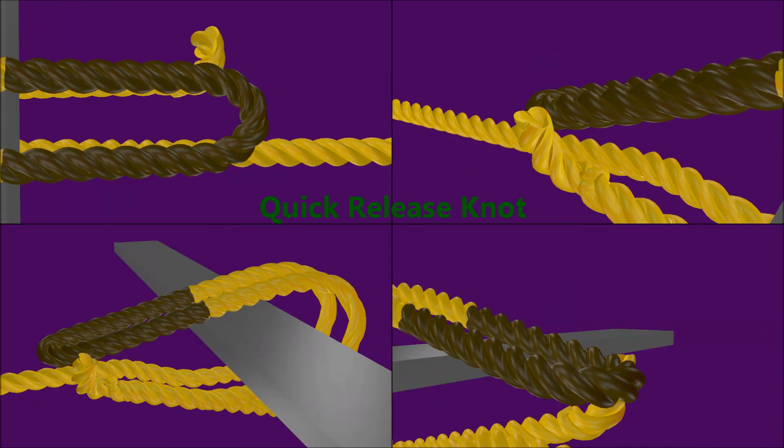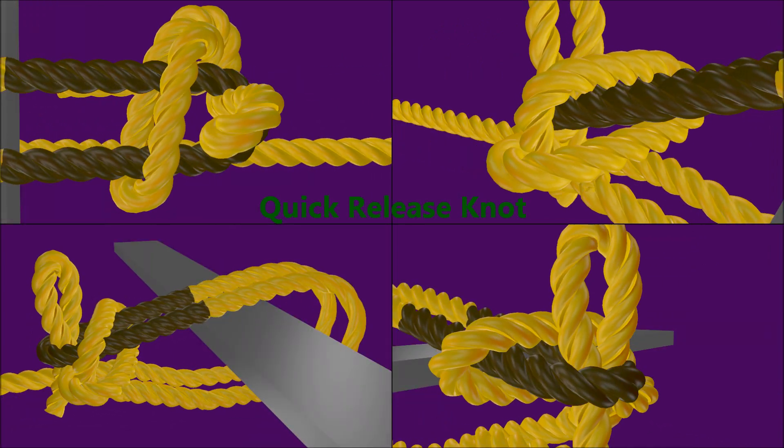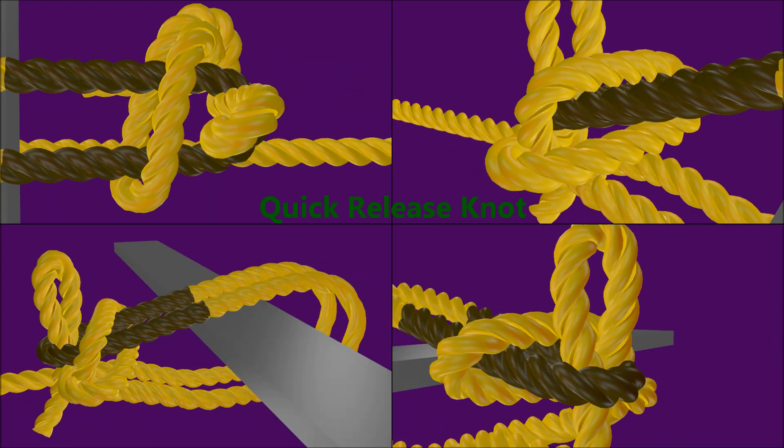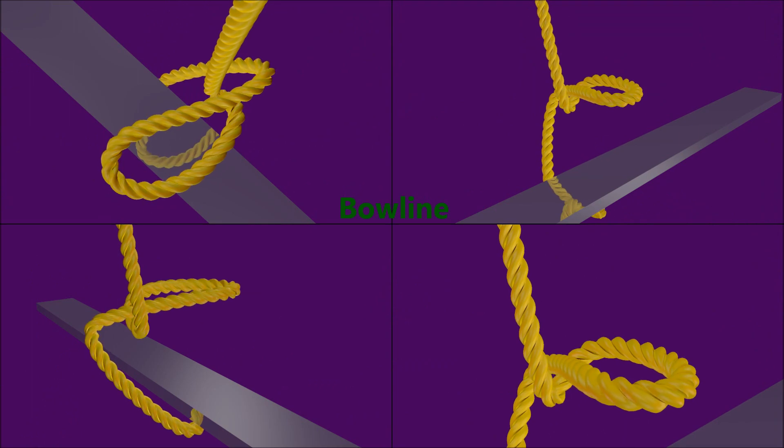This knot can be used in place of a quick release. The bowline is used to tie a fixed loop.